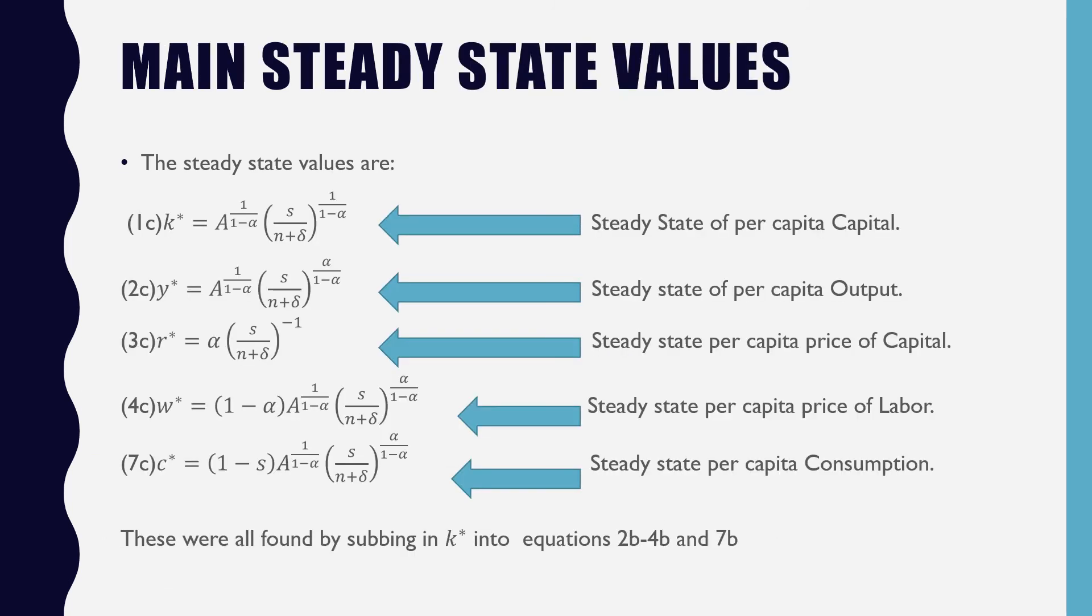The steady state values that we end up deriving are the steady state values of per capita capital, per capita output, per capita price of capital, per capita price of labor, and per capita consumption. These are all found by subbing in K star into equations 2b to 4b and 7b.